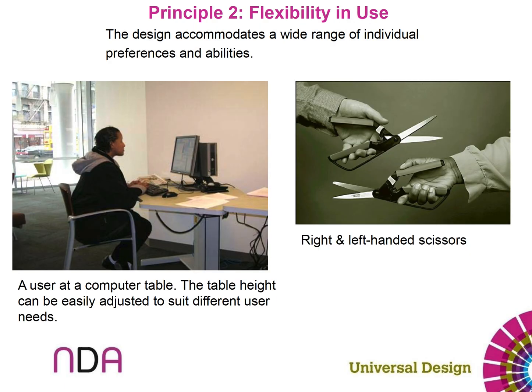There is also flexibility in use — principle two. Basically there's a wide range of individual preferences and abilities. Here we see somebody sitting at a table that is adjustable, with a seat that has rollers on it. This looks like a public building — we'll say it's a library. They don't know who's going to be using that table and that computer from day to day, so they have an adjustable desk that can adjust to any height of the user.